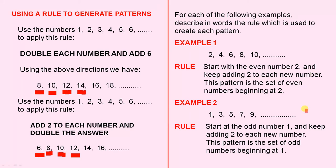Next example: 1, 3, 5, 7, 9. The rule, start at the odd number 1 and keep adding 2 to each new number. This pattern is the set of odd numbers beginning at 1.